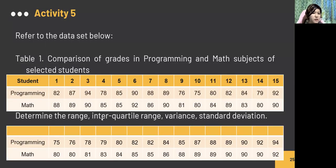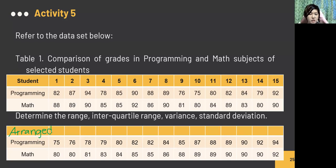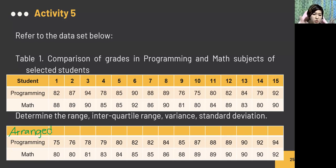Let's proceed to Activity 5. This table is a comparison of grades in programming and math subjects of selected students — it's just the arranged version provided for you. Please determine the range, IQR, variance, and standard deviation. Pause this video and resume once you've done this in Excel on your own.